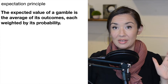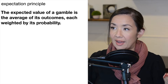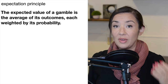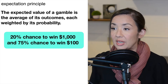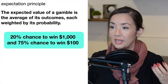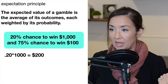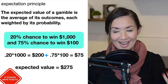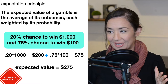This has to do with the expectation principle, which is a little bit in violation of what we just talked about. The expected value of a gamble is the average of its outcomes, each weighted by its probability. So if we do not apply any emotional information to how we evaluate gambles, we would do it mathematically. For example, if you had a 20% chance of winning $1,000 and a 75% chance to win $100, you multiply each probability by its outcome and add them together to get the expected value of $275.